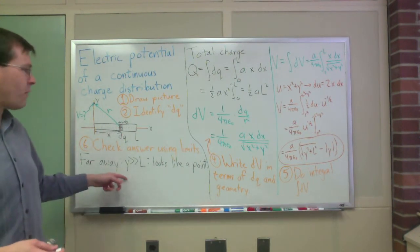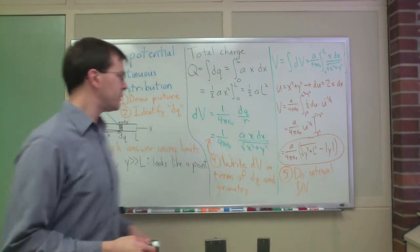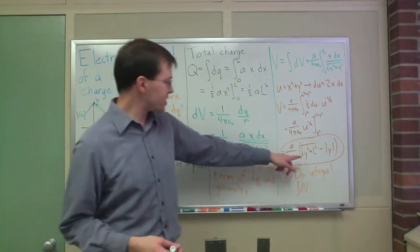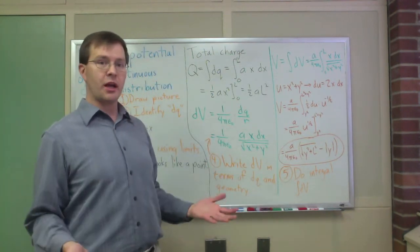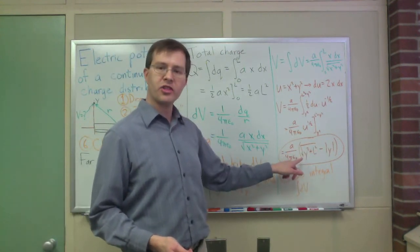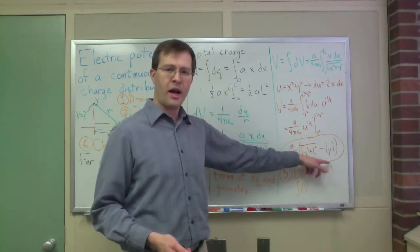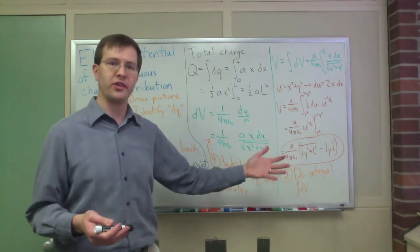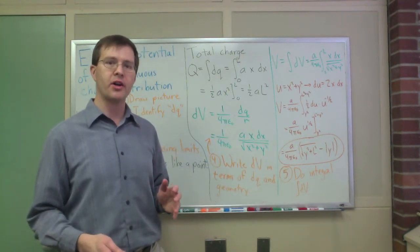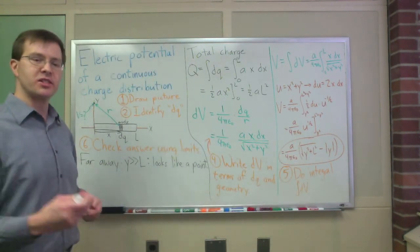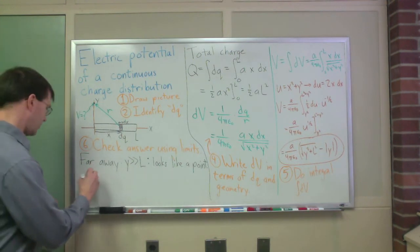I should be down to just seeing a point charge. If I'm far enough away from this thing, I won't be able to tell that it's a rod and not a chicken or something. Let's see what that looks like. If my y is much bigger than L, then I want to do a little approximation here. If y is much bigger than L, the first thing I might try is to ignore the L. So I have the square root of y squared minus absolute value of y, that's zero. That's comforting. But I want to know how quickly does it go to zero? What's the leading non-zero term?